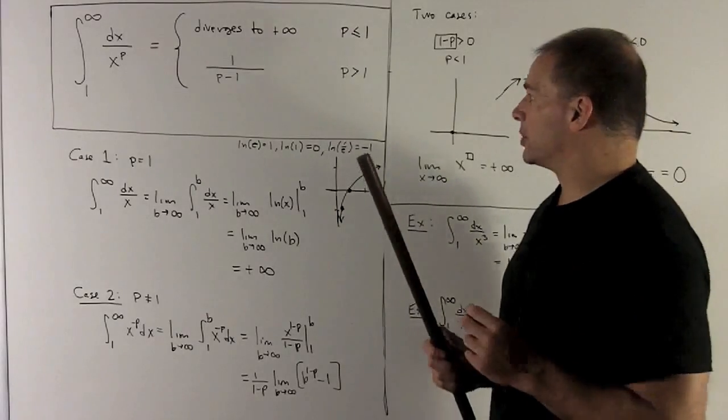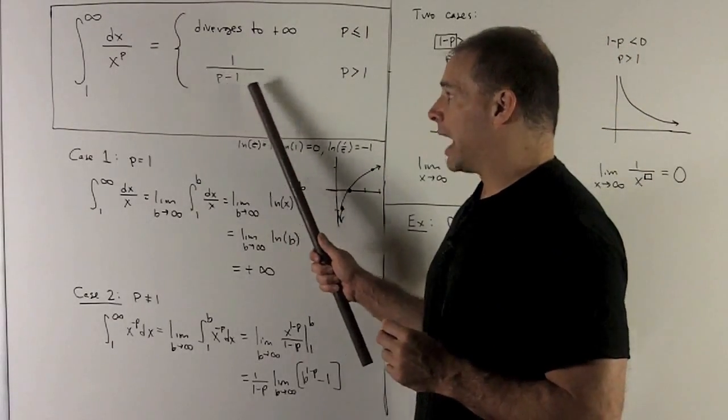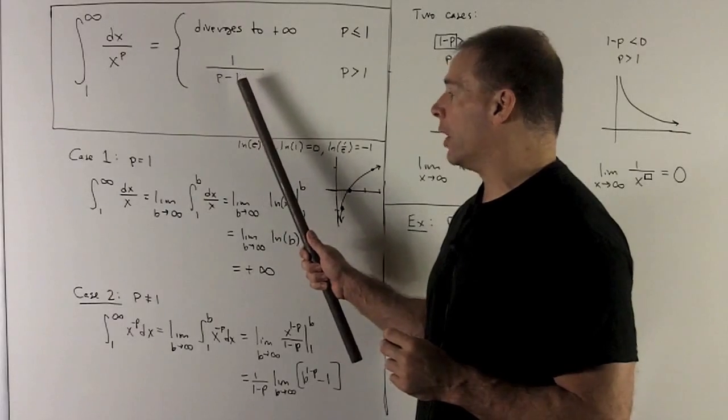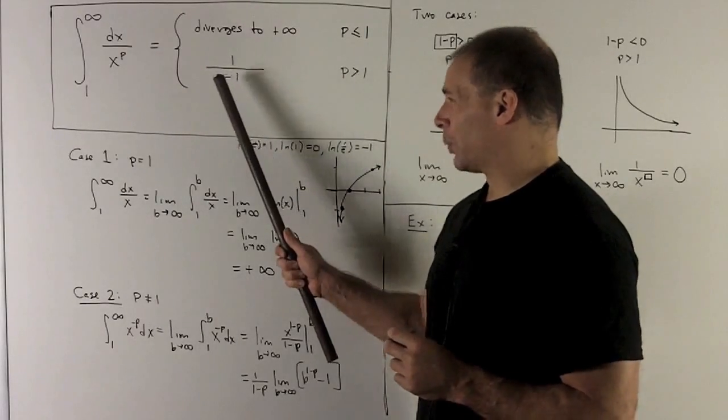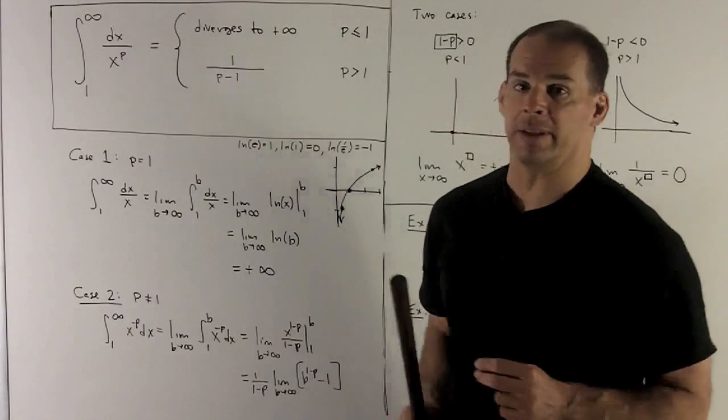This makes sense because if you notice, as p gets closer and closer to 1, p minus 1 gets closer and closer to 0. And so when we finally hit 1, we're going to expect some divergence going on, which agrees with what we get in the first case.